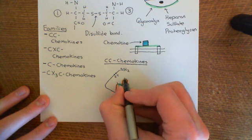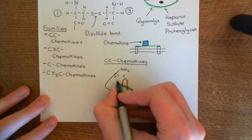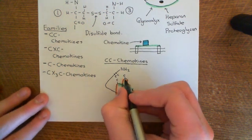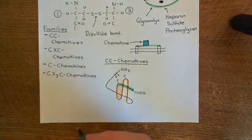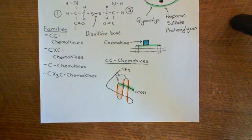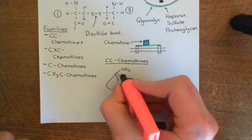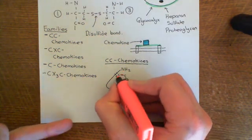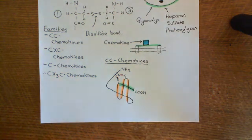Now the third and the fourth cysteines are still here. And you'll still form disulfide bonds between the first and the third cysteine and the second and the fourth cysteine. So here are your disulfide bonds that hold your chemokine together.